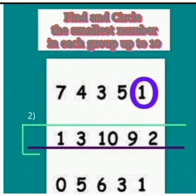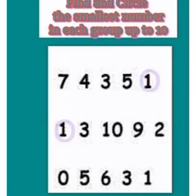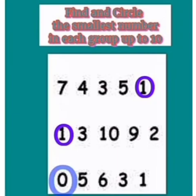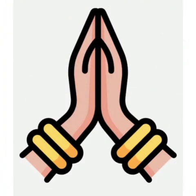In the second row there are many numbers, but the number one is also the smallest number. Kids, can you find the smallest number in the third row? Yes, the number zero is the smallest number. It's clear — thank you!